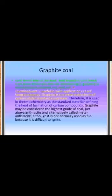The last type of coal is graphite coal. As you know, graphite is used in pencils and in the formation of electrodes. Graphite is used in thermochemistry as the standard state for defining the heat of formation of carbon compounds. Graphite may be considered the highest grade of coal, just above anthracite, alternatively called meta-anthracite. Although it is not normally used as fuel because it is difficult to ignite, as its ignition temperature is quite high.